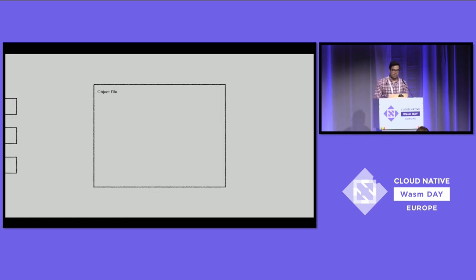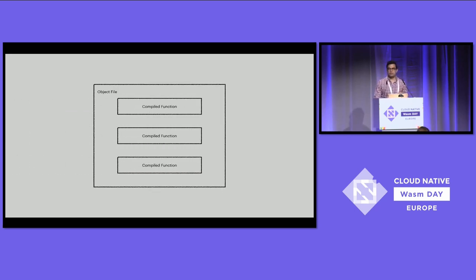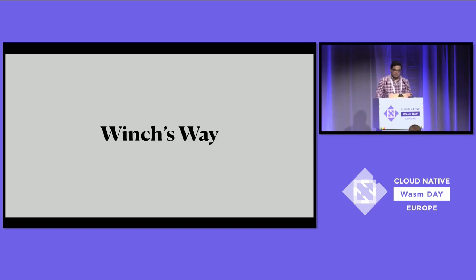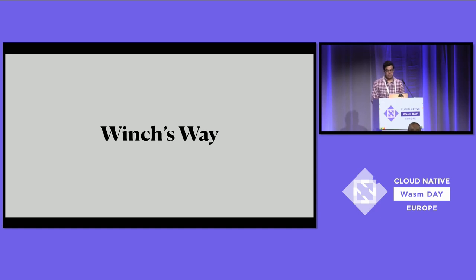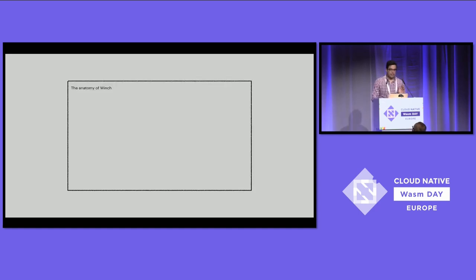Once all that is done, WasmTime takes all the compiled functions that were sent to CraneLift in parallel and creates an object file — the thing given back when you create a new module or ahead-of-time compile a module to machine code. Now it's time to present how Winch does things. There aren't a lot of differences in the first and last entry points — we compile functions in parallel and create an object file at the end — but the main difference is how we compile each function into machine code.